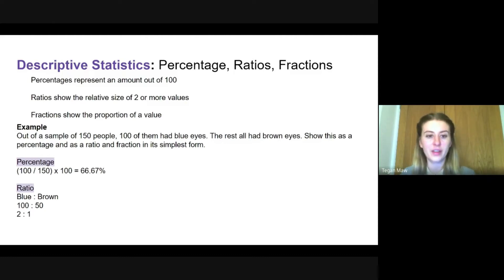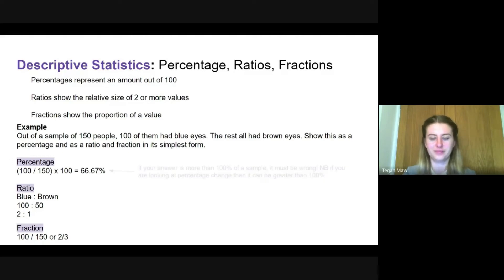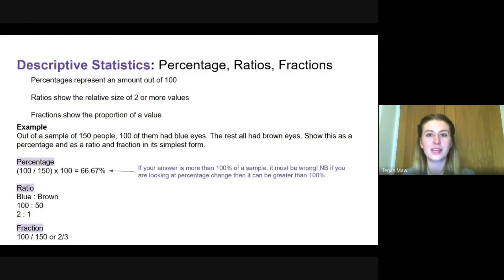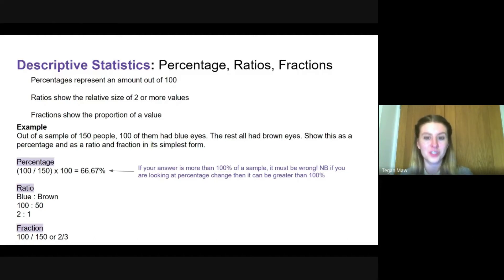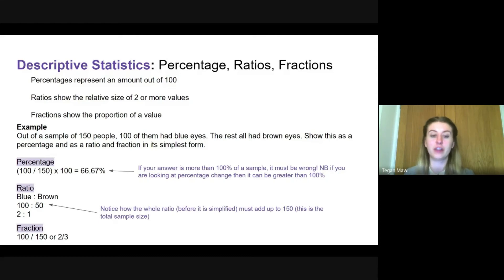We can simplify the ratio 100:50 down to 2:1 — for every one person with brown eyes there are two with blue eyes. As a fraction, 100 out of 150 simplifies to two-thirds. A couple of notes: with percentages, if your answer exceeds 100% of a sample you've likely swapped the numbers — though percentage change can exceed 100%. With ratios, notice the whole ratio before simplification should add up to the total sample size of 150, not 250, so it's 100 to 50, not 100 to 150.